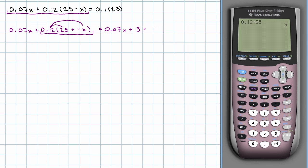And then 0.12 times negative x is just negative 0.12x. Okay. Now, my like terms are this 0.07x and this negative 0.12x.